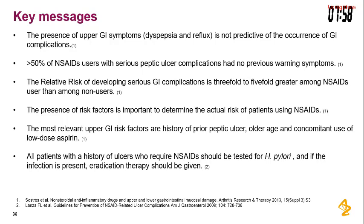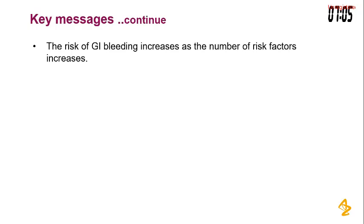To conclude: the presence of upper GI symptoms such as dyspepsia and reflux is not predictive of GI complications. More than 50% of NSAID users with serious peptic ulcer complications had no previous warning symptoms. The relative risk of serious GI complications is threefold to fivefold greater among NSAID users. The most relevant upper GI risk factors are history of prior peptic ulcer, older age, and concomitant use of low-dose aspirin. All patients with a history of ulcers requiring NSAIDs should be tested for H. pylori, and if infection is present, eradication therapy should be given.